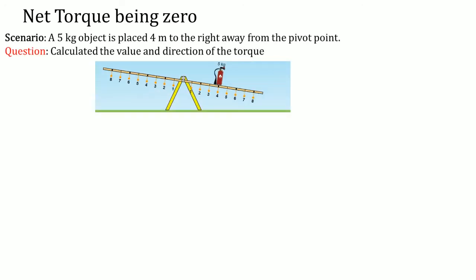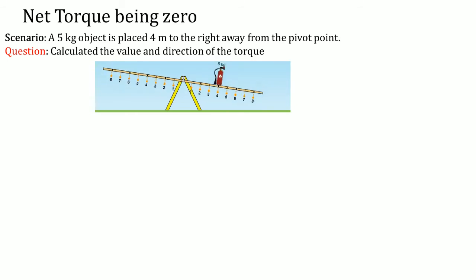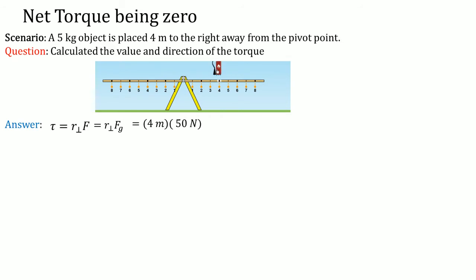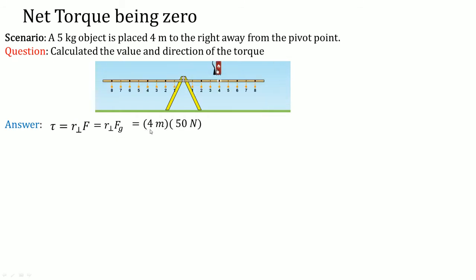Let's take a look at net torque now being zero. The scenario here is that a 5 kilogram object is placed 4 meters to the right away from the pivot point, and we know this will cause a torque to occur — you see the balance beam turning clockwise. Calculate the value and direction of this torque. Torque equals R perpendicular times force. The force here is the force of gravity, which is 50 Newtons (5 kilograms times 10, which is g). The R perpendicular is 4 meters away, so 4 meters times 50 Newtons gives a torque of 200 Newton meters. The direction here is clockwise because it's going to the right.